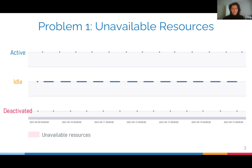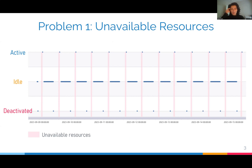The current reactive resource allocation policy deactivates the resources that were idle for a while. Unfortunately, when the customer comes online after an idle time interval, there is a brief time interval during which resources are unavailable. Even if this time interval is only a few minutes, it can be problematic for latency-sensitive applications.